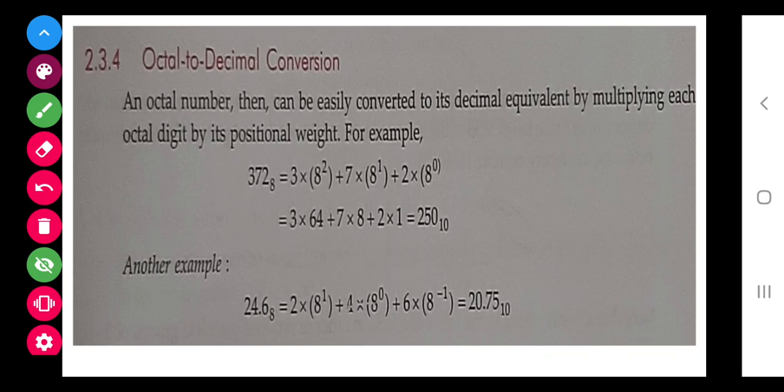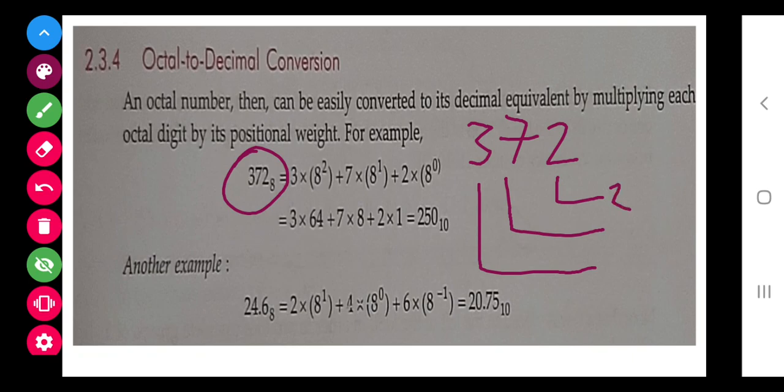I have taken the first topic as octal to decimal. An octal number includes 0 to 7. I have taken 372. Now I have to convert, so my method is this: I will write 2, 7, and 3.